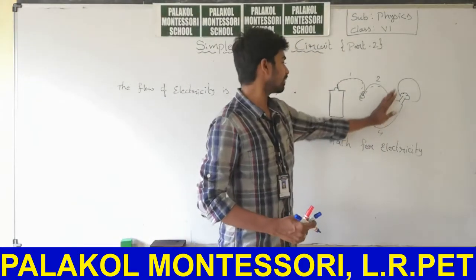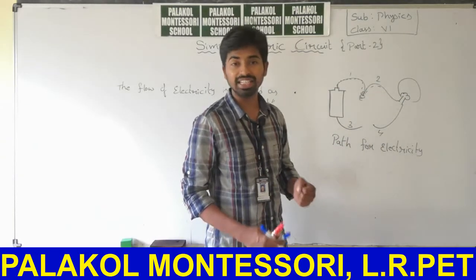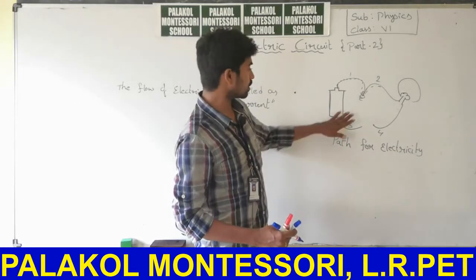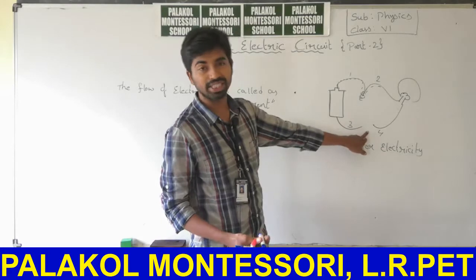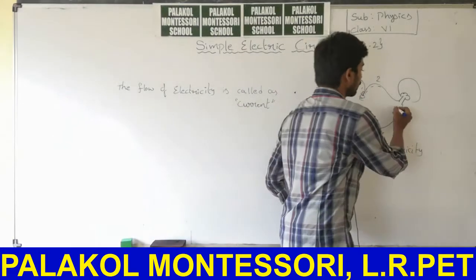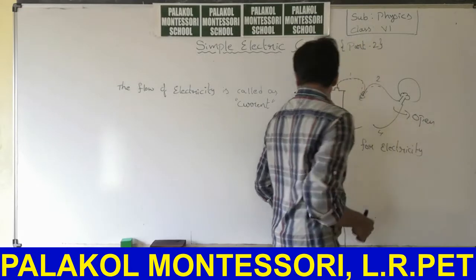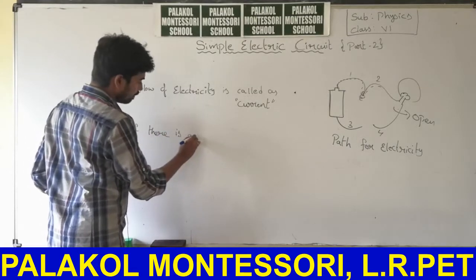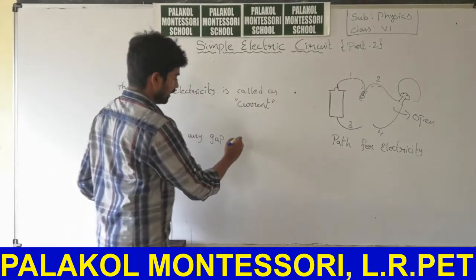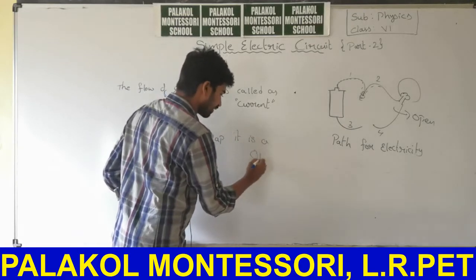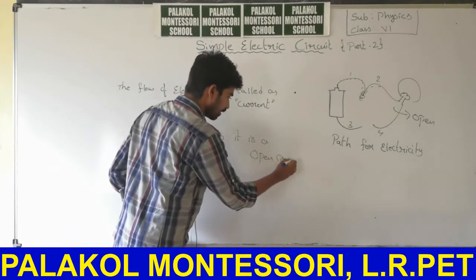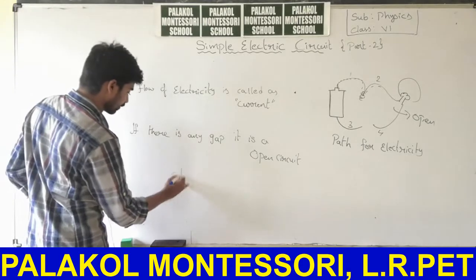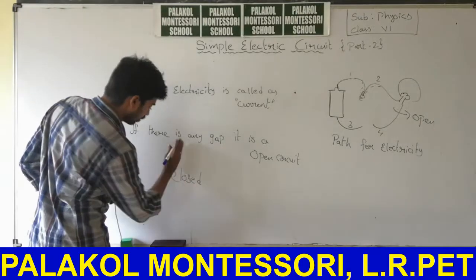If there is any gap, the bulb does not glow. We will call this as open circuit, because it is not closed — there is a gap here. This is an open circuit. If there is any gap, it is an open circuit. Otherwise, if there is no gap, it is a closed circuit.